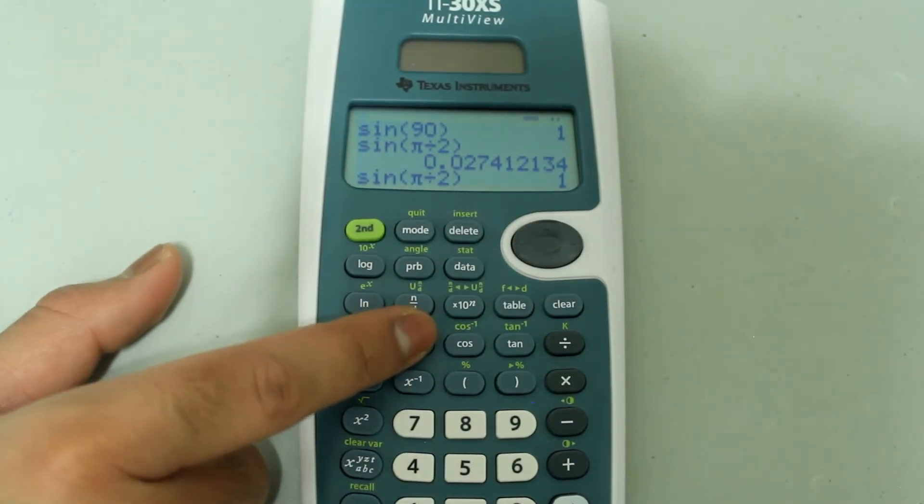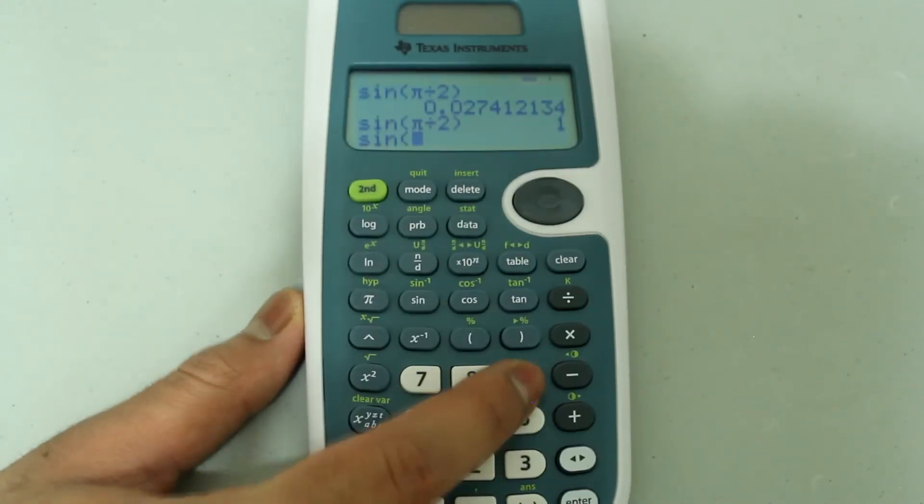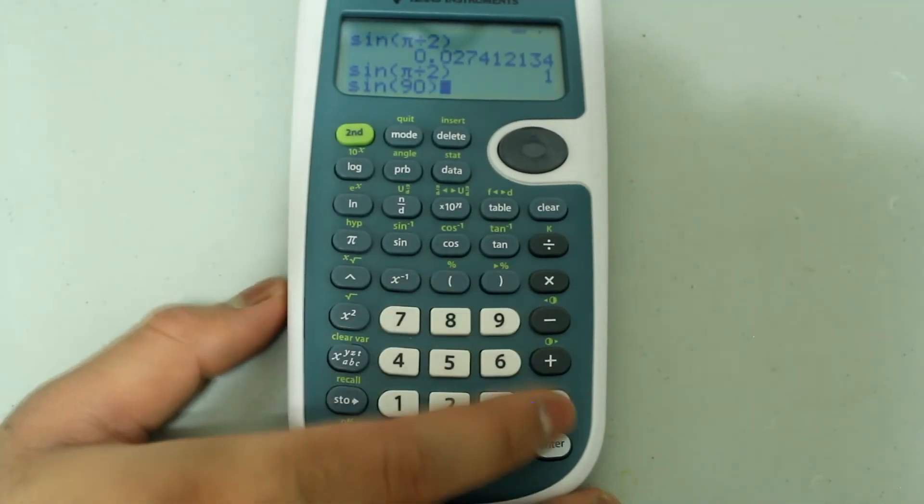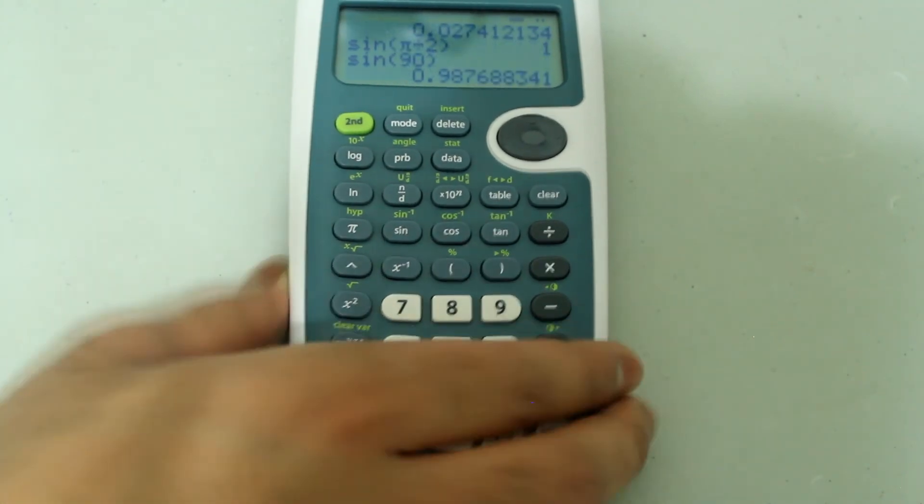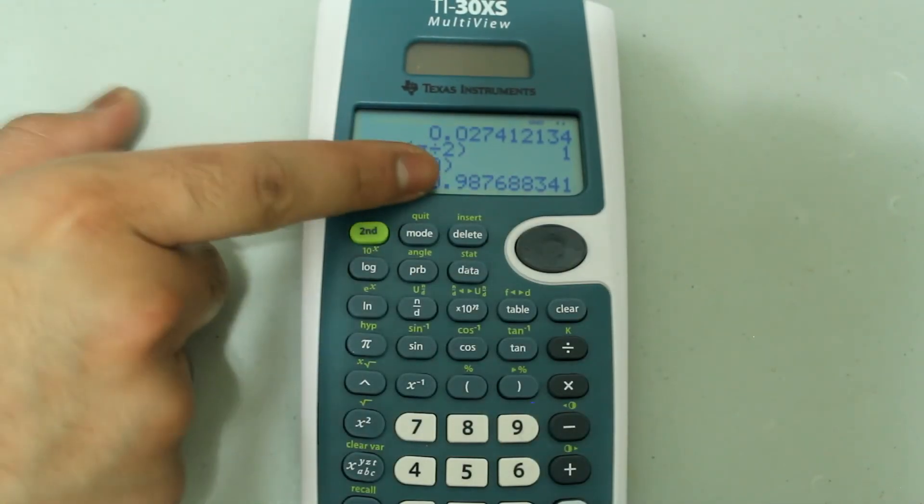Now if I type in sine of 90, and close the parenthesis, press enter, the answer doesn't come out to 1.